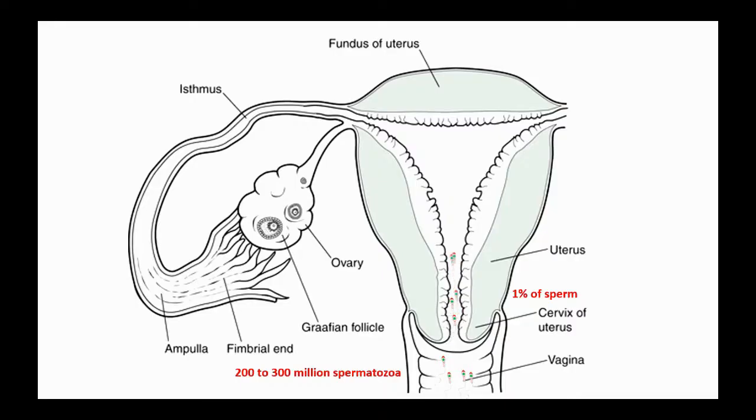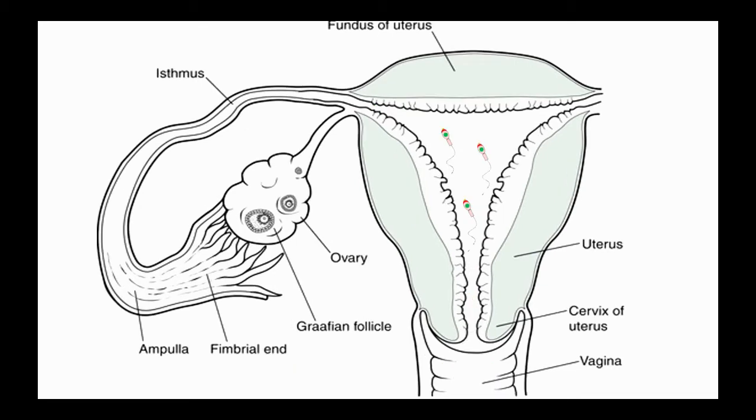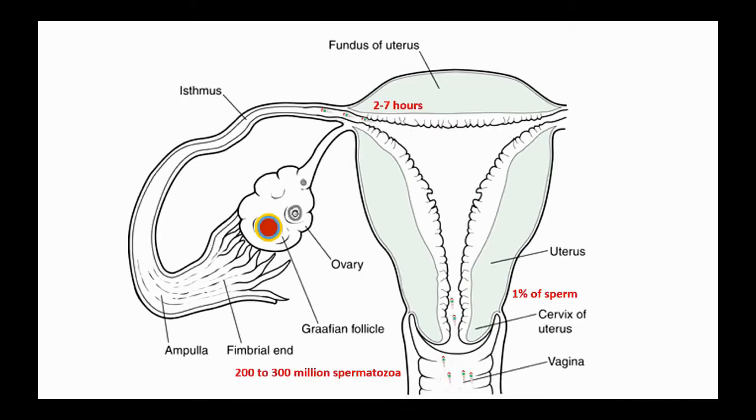Only about 300 to 500 reach the ampulla, which is the site of fertilization. Movement of sperm from the cervix to the oviduct requires a minimum of 2 to 7 hours and is accomplished primarily by their own propulsion as well as movements of fluids created by uterine cilia. After reaching the isthmus of the uterine tube, sperm become less motile and cease their migration.